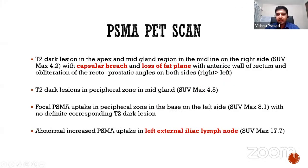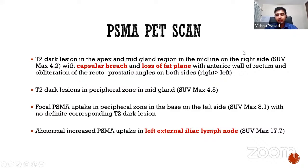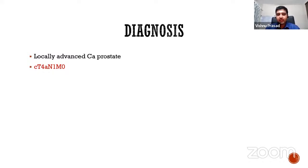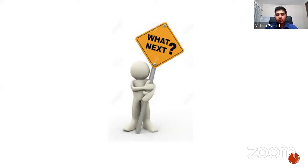A TRUS-guided biopsy showed acinar adenocarcinoma, Gleason score 4+5, grade group 5, with perineural invasion in one core and no lymphovascular invasion. PSMA PET-CT showed a PSMA-avid lesion in the prostate, a PSMA-avid external iliac lymph node, capsular breach, and loss of fat planes with the anterior wall of rectum. A diagnosis of locally advanced CA prostate — clinically T4a N1 M0 — was made.